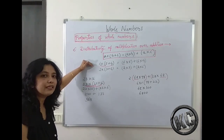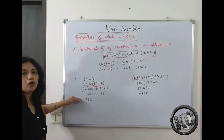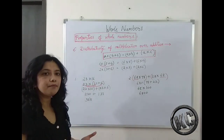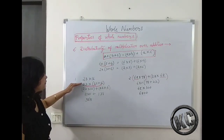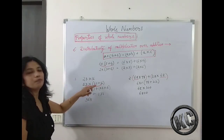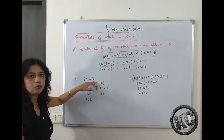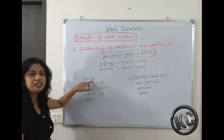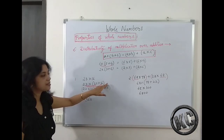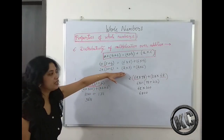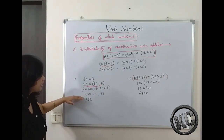Now let's solve two sums so that it becomes convenient for you to do your exercises. For 23 multiplied by 16 — multiplying directly becomes longer. So you can distribute it. Remember: when you distribute, ensure the units place becomes zero for convenience. Here we distribute 16 as 10 plus 6, so it becomes 23 multiplied by (10 plus 6). Then using distributivity: 23 multiplied by 10, plus 23 multiplied by 6. This makes it easy to solve.